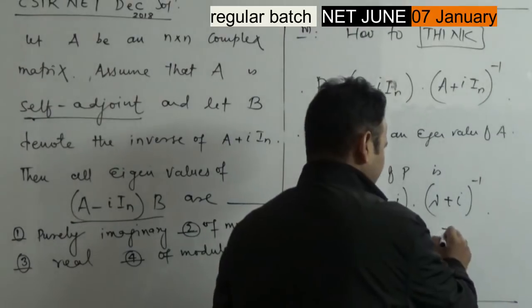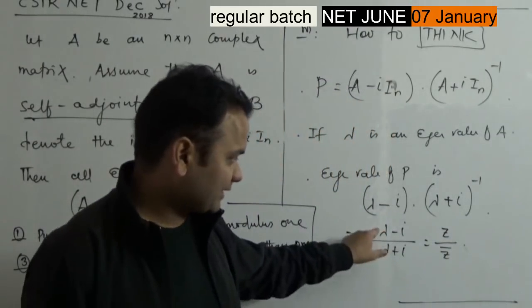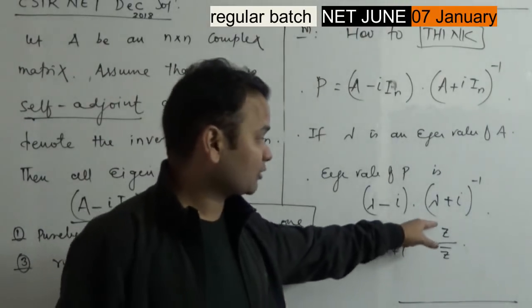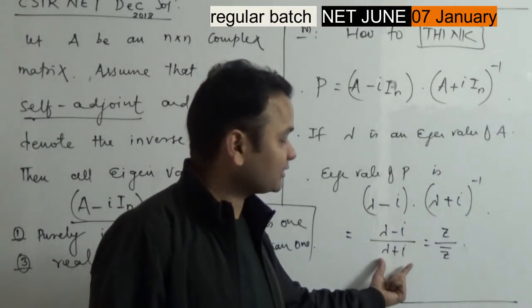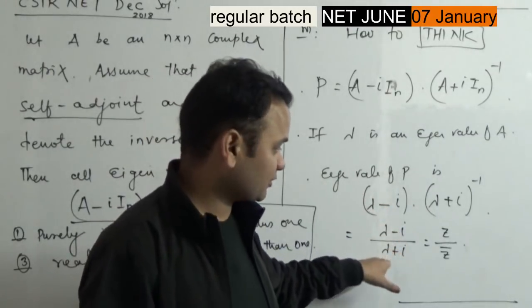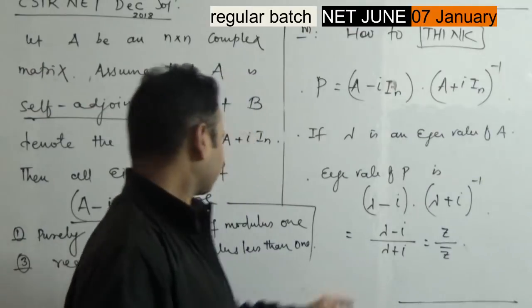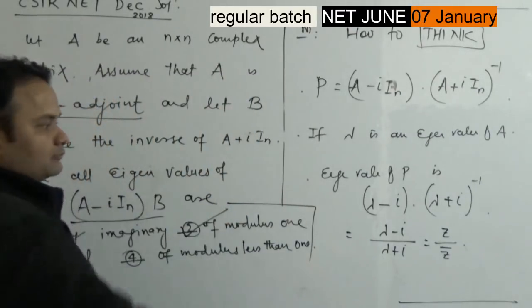So if this is your z, then this is nothing but z bar. If z is lambda minus i, then 1 over (lambda plus i) is z bar. This is the complex conjugate. And in fact, this is non-zero because this is an eigenvalue of invertible matrix. So this is non-zero. So the modulus of this is going to be 1.